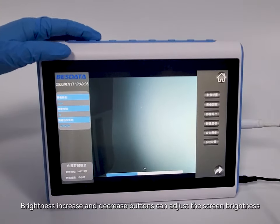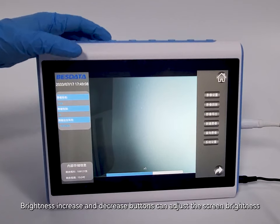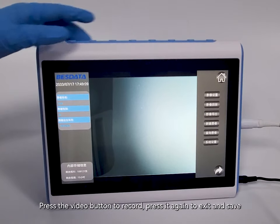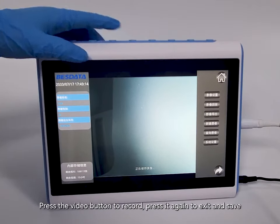Brightness increase and decrease buttons can adjust the screen brightness. Press the video button to record, press it again to exit and save.